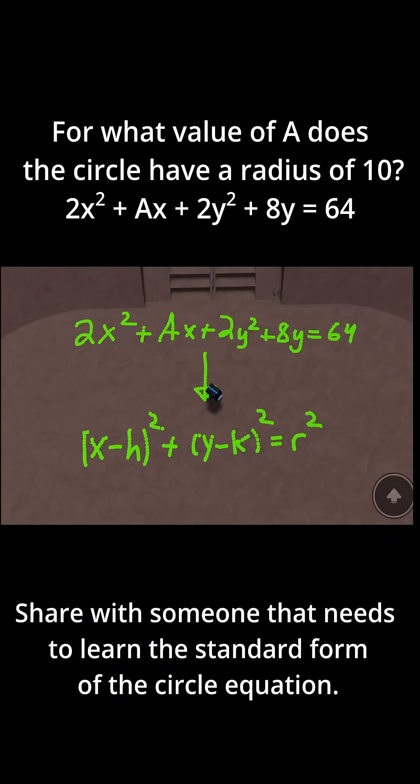This problem says, for what value of a does the circle have a radius of 10, where our equation is 2x² + ax + 2y² + 8y = 64?